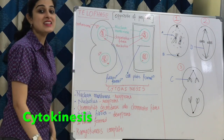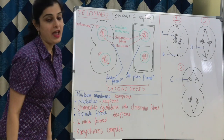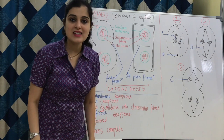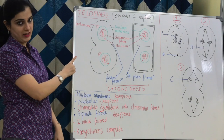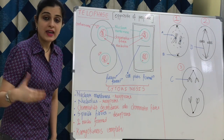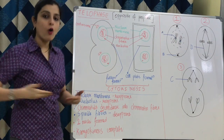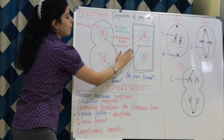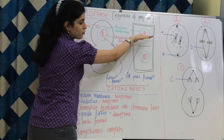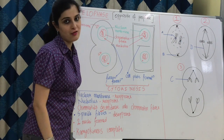After karyokinesis, cytokinesis occurs — the cytoplasm divides giving rise to two daughter cells. An important point: cytokinesis begins right from late anaphase and becomes prominent in telophase. In animal cells, cytokinesis takes place by furrow formation — the furrow deepens giving rise to two daughter cells. In plant cells, cytokinesis takes place by cell plate formation — the plate grows towards the periphery giving rise to two daughter cells. That is the end of mitosis — two daughter cells form, both diploid in nature.